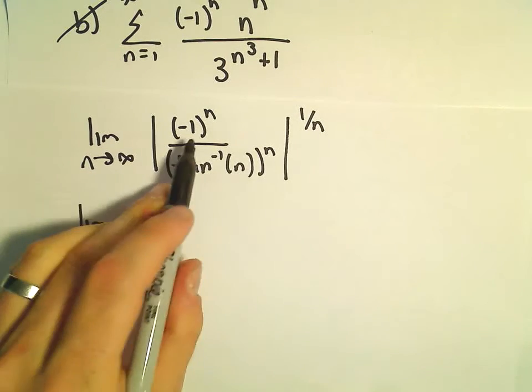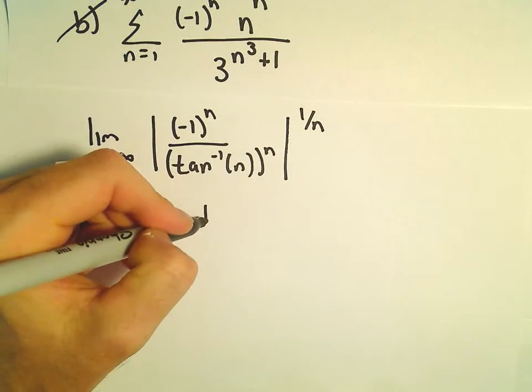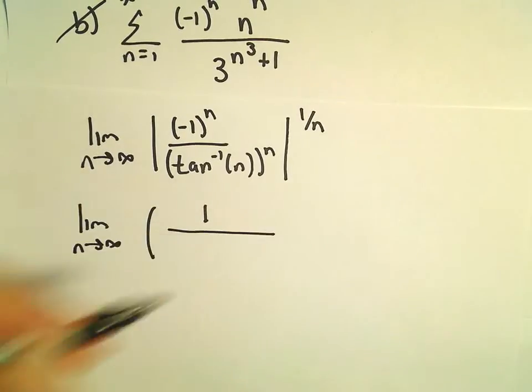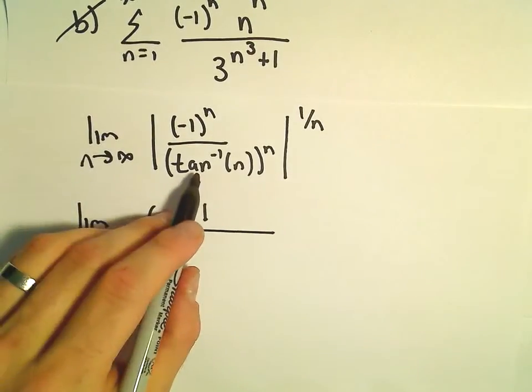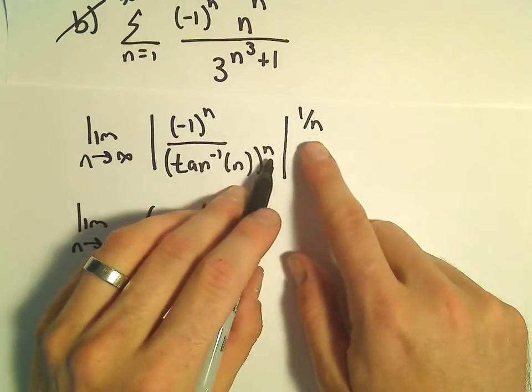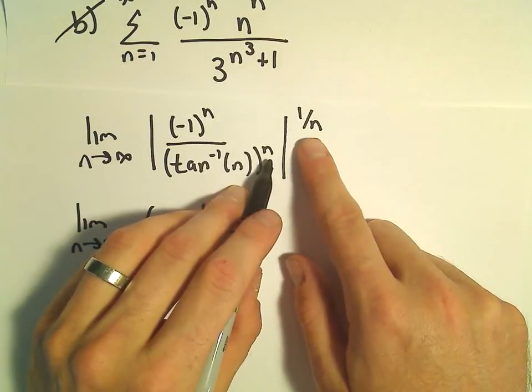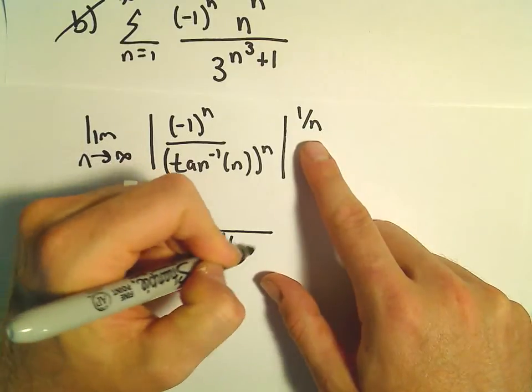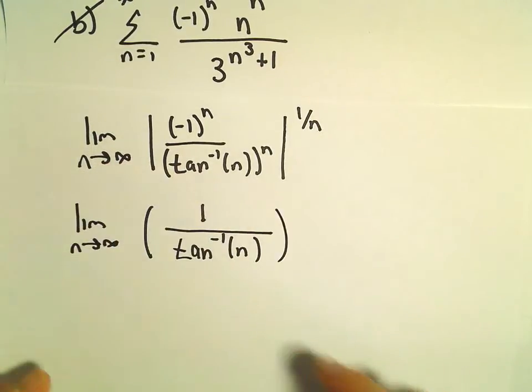Well, the absolute value of negative 1 to the n is just 1. 1 to any power is 1, so I'm not even going to bother putting the exponent. In the denominator, we would have arctangent of n raised to the n, and then all of that raised to the 1 over n power. Well, that would just leave us with arctangent of n in the denominator.